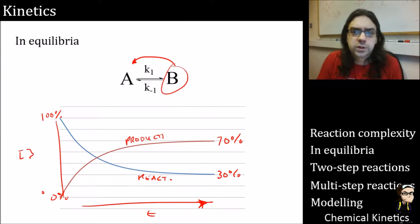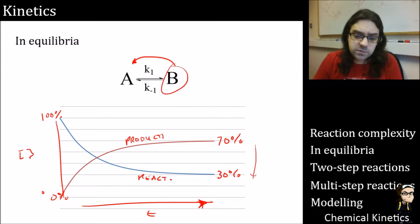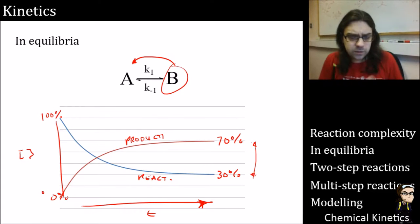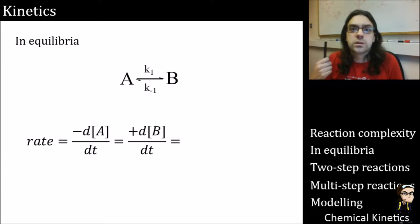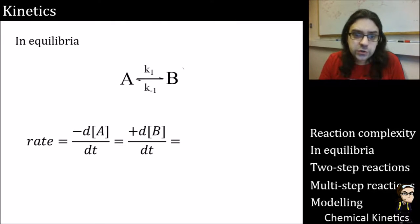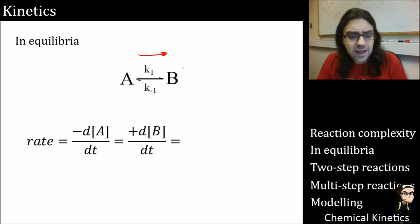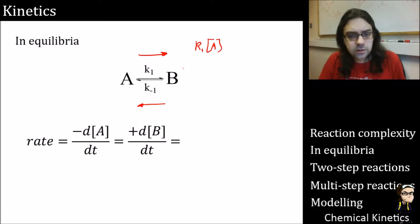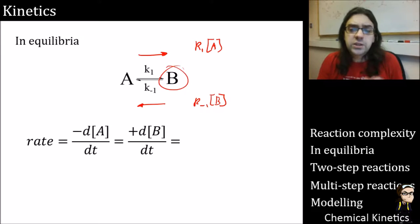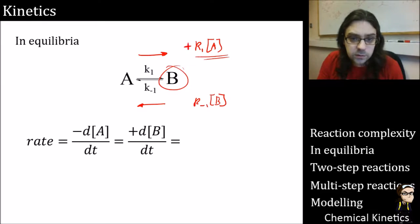Looking at the equilibrium case on the same graph: we start with 100% reactant, 0% product, but the products come up only to about 70%, so reactants remain at 30%. There must be some kind of backwards reaction — some product is reforming the starting material. So there's a little bit of complexity added. We need to figure out what actually changes the concentration of A and B. B is formed from A in a forward first-order reaction at rate K1 times A, and removed by a backward first-order reaction at rate K-1 times B.